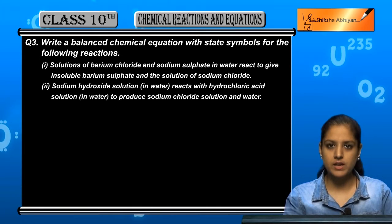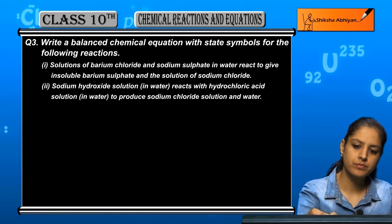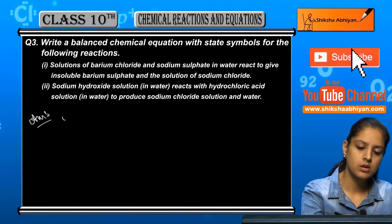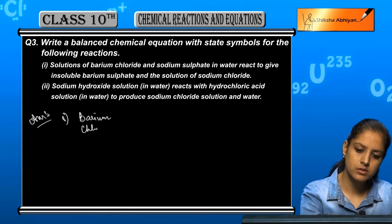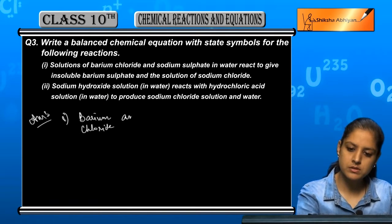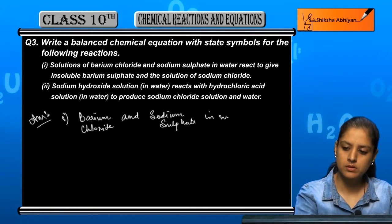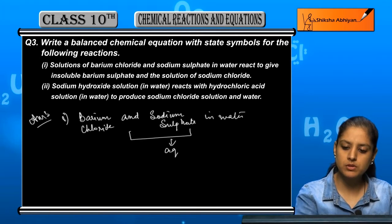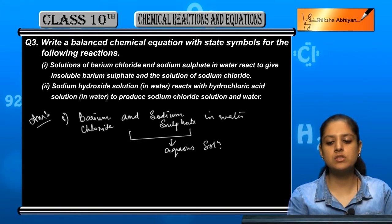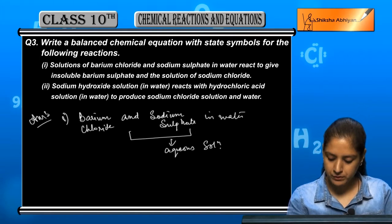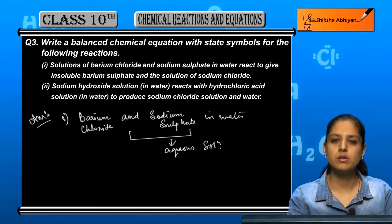The first reaction given is solutions of barium chloride and sodium sulphate in water. Since both are solutions in water, this means aqueous solution. We react these to give insoluble barium sulphate and the solution of sodium chloride. Now let us write it in the form of a reaction.